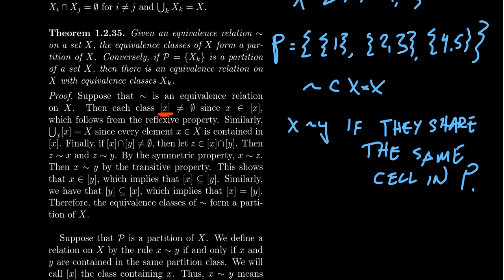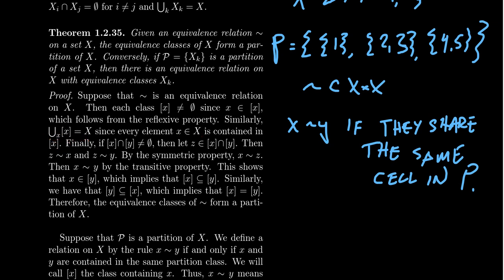Why is the union all of the set? If you take the union of every equivalence class, that gives the whole set. Because if you take an arbitrary element inside of X, it's contained inside of its own equivalence class. And so the union of all equivalence classes will give X. So we have the non-empty and union conditions.